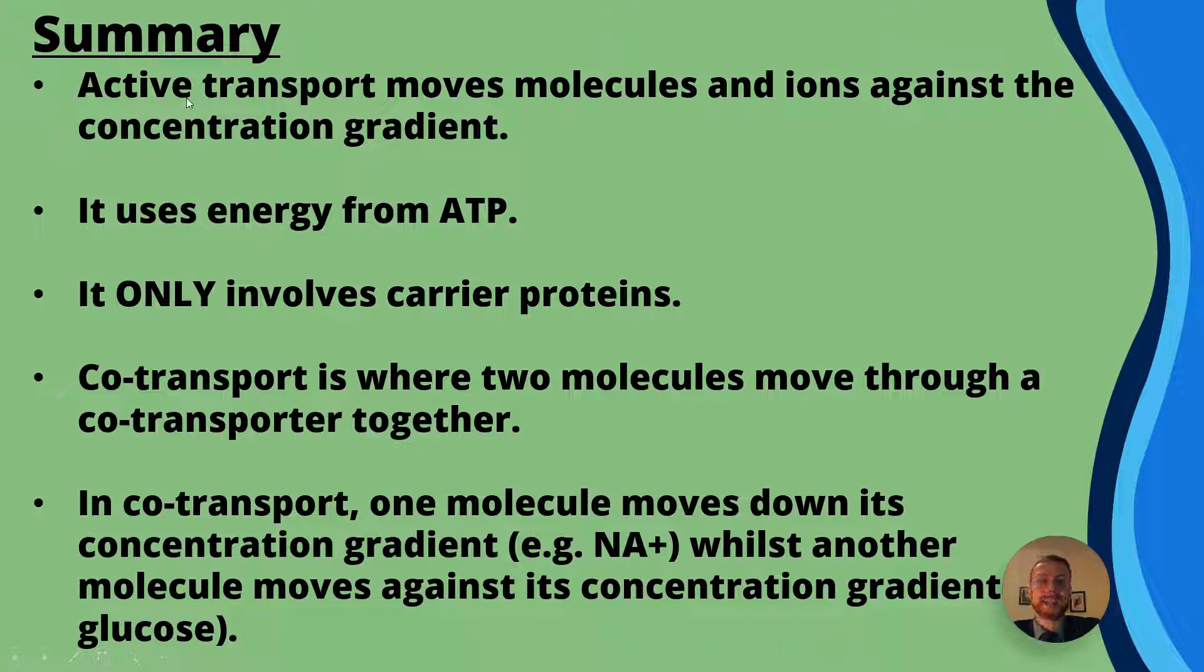To summarize then, active transport moves molecules and ions against the concentration gradient. It uses energy from ATP. It only involves carrier proteins. Co-transport on the other hand is where two molecules move through a co-transporter together, so that's what the protein is called. Now in co-transport one molecule moves down its concentration gradient whilst another moves against.